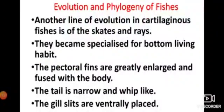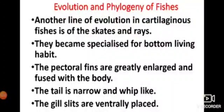Another line of evolution in cartilaginous fishes is that of skates and rays, such as Raja or Torpedo. Sharks were adapted for swimming properly, but the other line of evolution in cartilaginous fishes developed specialized bottom-living habits. These are bottom-dwelling species living on the sea floor.